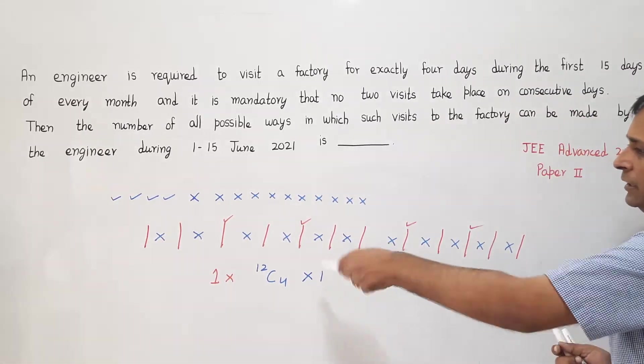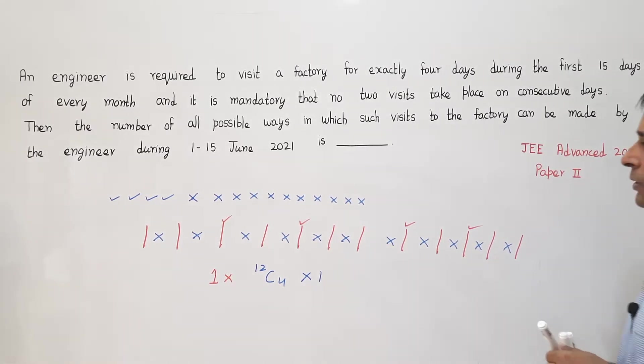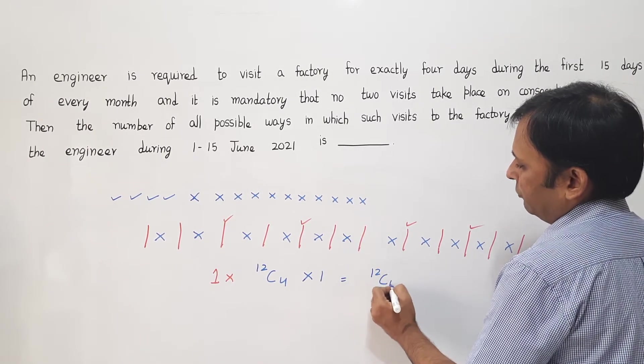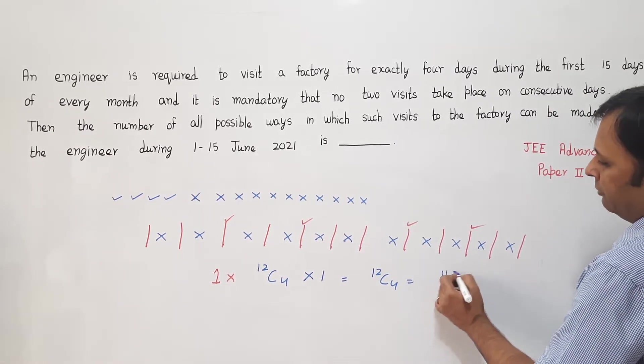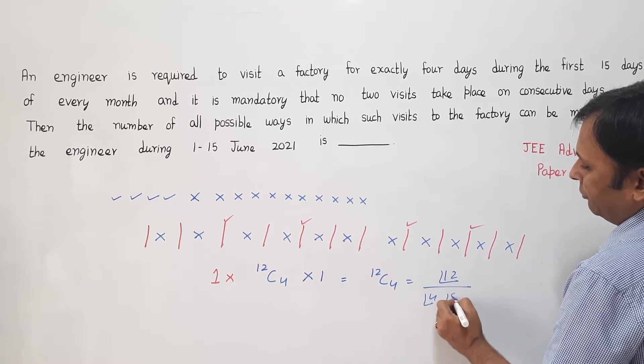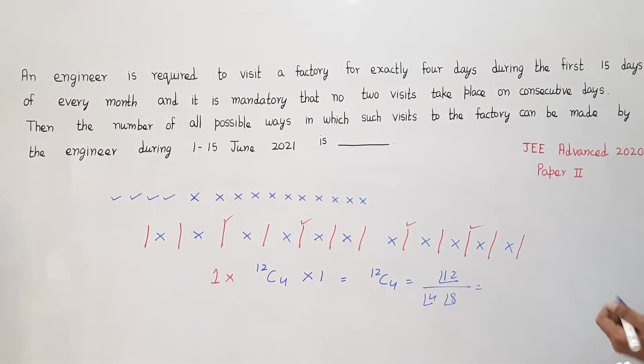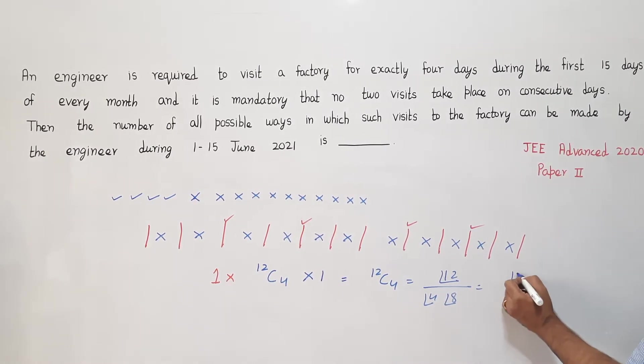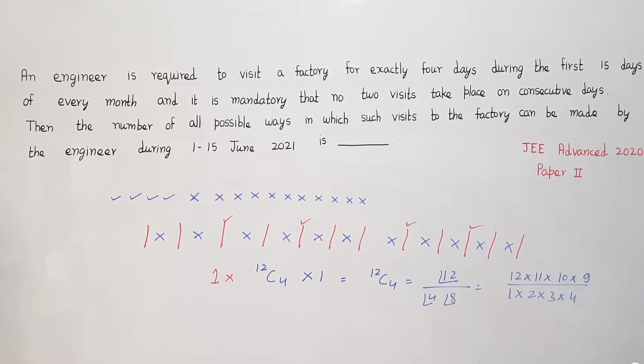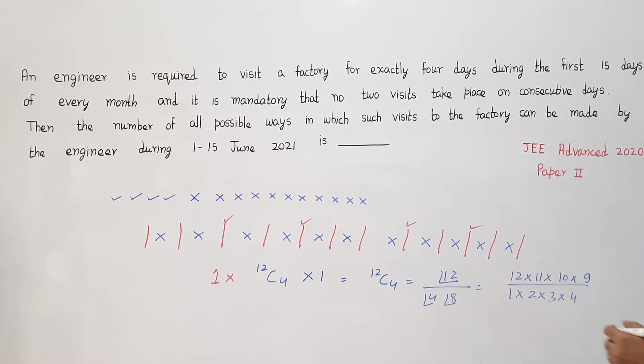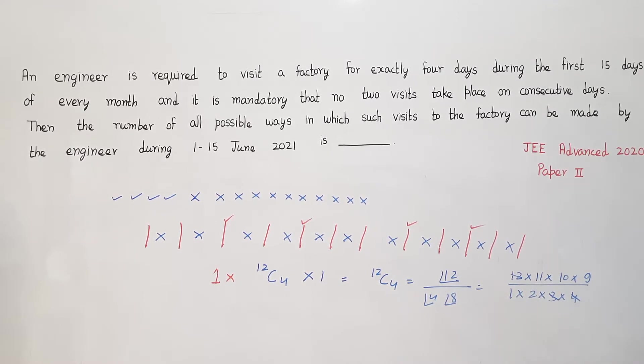So finally, the number of ways the engineer can make the visit comes out to be 12 C 4 ways, which can be calculated as 12 factorial divided by 4 factorial times 8 factorial, or 12 × 11 × 10 × 9 divided by 1 × 2 × 3 × 4. Here 3 × 4 gives 12, and 2 × 5 equals 10. So finally, I get 55 × 9.